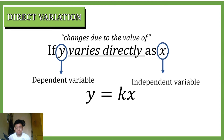This can be translated in equation form as y is equal to kx, wherein k is the constant of variation, meaning it is the factor that will not change in this situation. To better understand direct variation, let's have a real-life application.